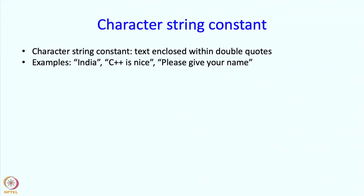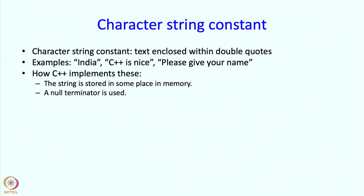For this we need the notion of a character string constant. Character string constants are simply text enclosed within double quotes. For example India is a character string constant. C++ is nice and please give your name are also character string constants. They are constants in the sense that they are not variables. You cannot change things inside this. You are not expected to change things inside this. Now how does C++ deal with such constants? Well first of all C++ stores the string in some place in memory. And of course a null terminator is also stored. So that is a convention. It is useful to follow conventions. The null terminator is used and you will see that it comes in handy.